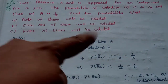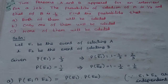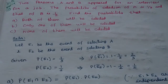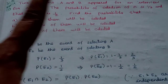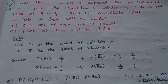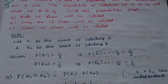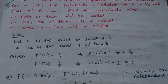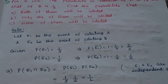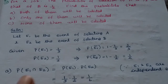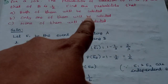For the probability that both A and B will be selected — that is probability of E1 intersection E2 — since E1 and E2 are independent events, we multiply: probability of E1 into probability of E2, which is 1 by 3 into 1 by 2. The answer is 1 by 6.